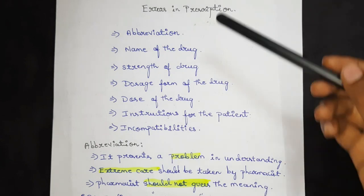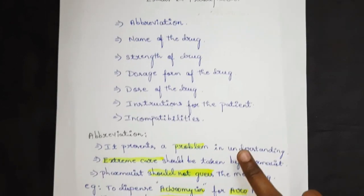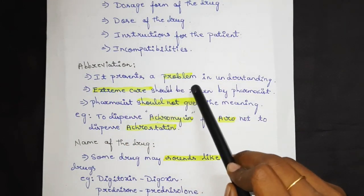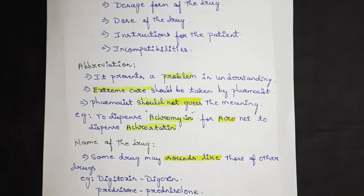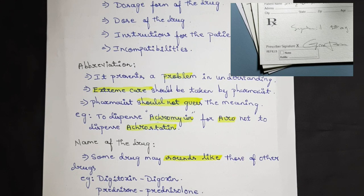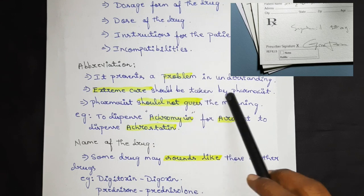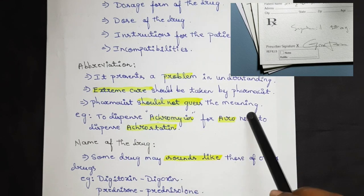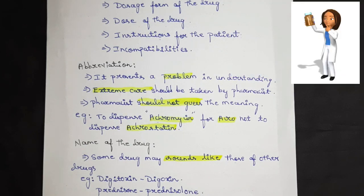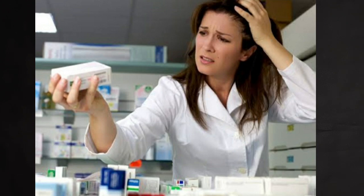The first error is abbreviation. One problem in prescription is a problem in understanding. Prescription is very important and the understanding about the abbreviation format of the medicine is something the pharmacist needs to be aware of. The pharmacist should not guess the meaning. If the abbreviation of a medicine is unclear — whether it means this or that — it creates a confusion state.